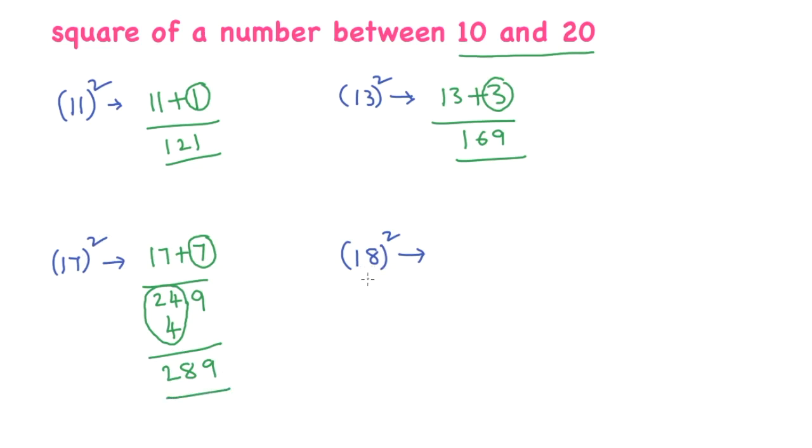Similarly, to calculate 18 square, first I write like this. 18 plus 8. I'll square this number. 8 square is 64.